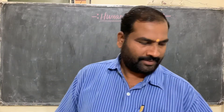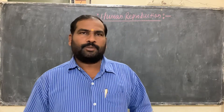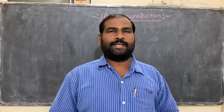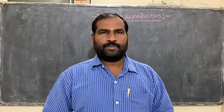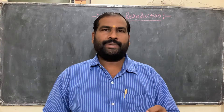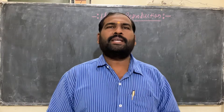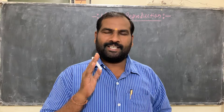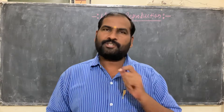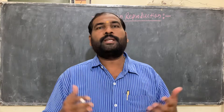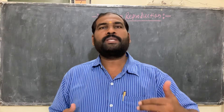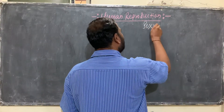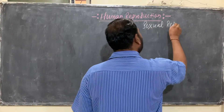Today we will study human reproduction — what it is and how human beings reproduce. Human beings are sexually reproducing organisms. There are two types of reproduction: asexual reproduction and sexual reproduction. Human beings reproduce by means of sexual reproduction.